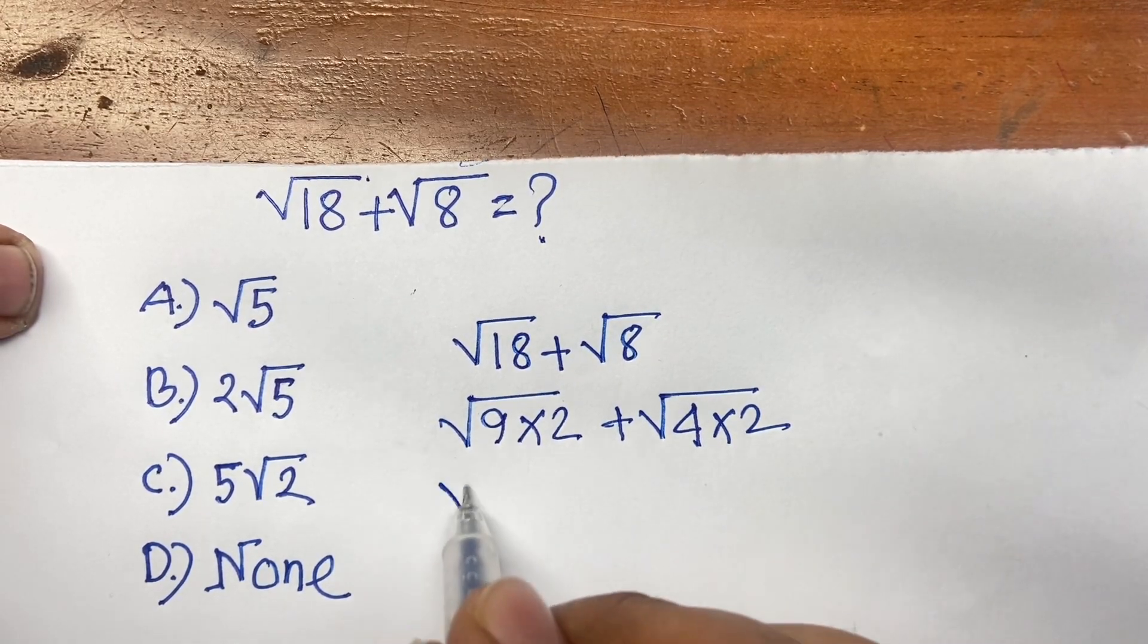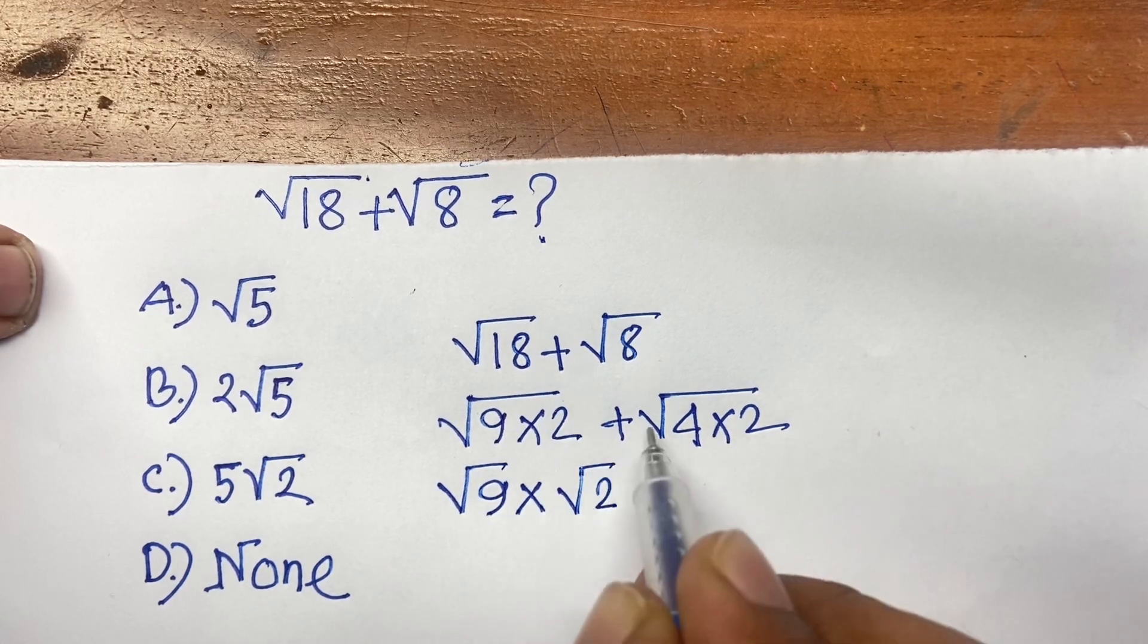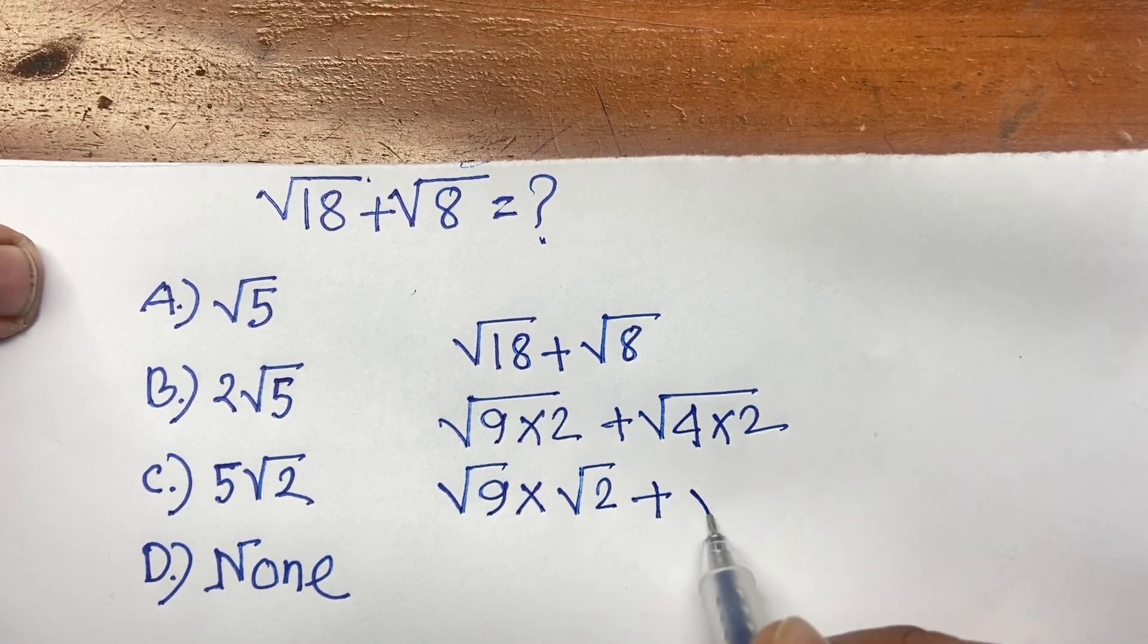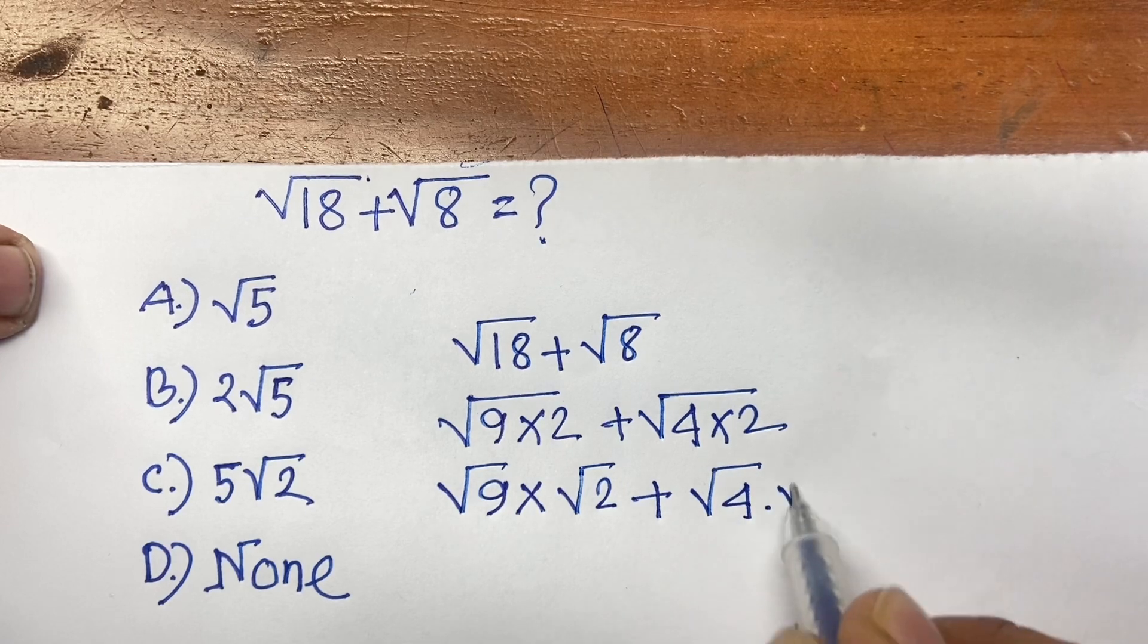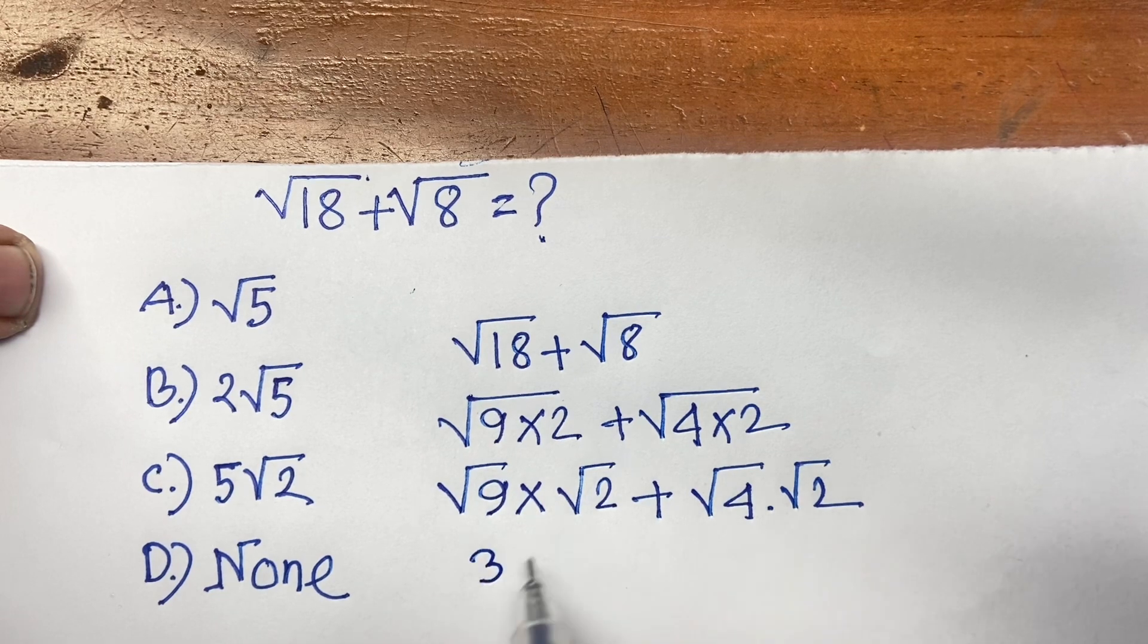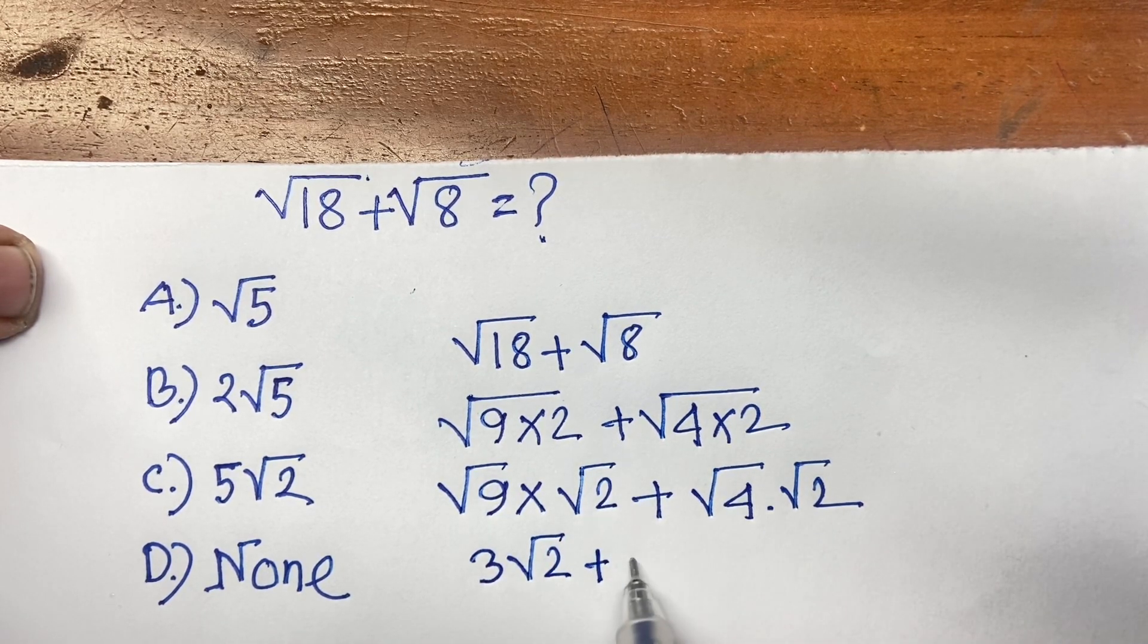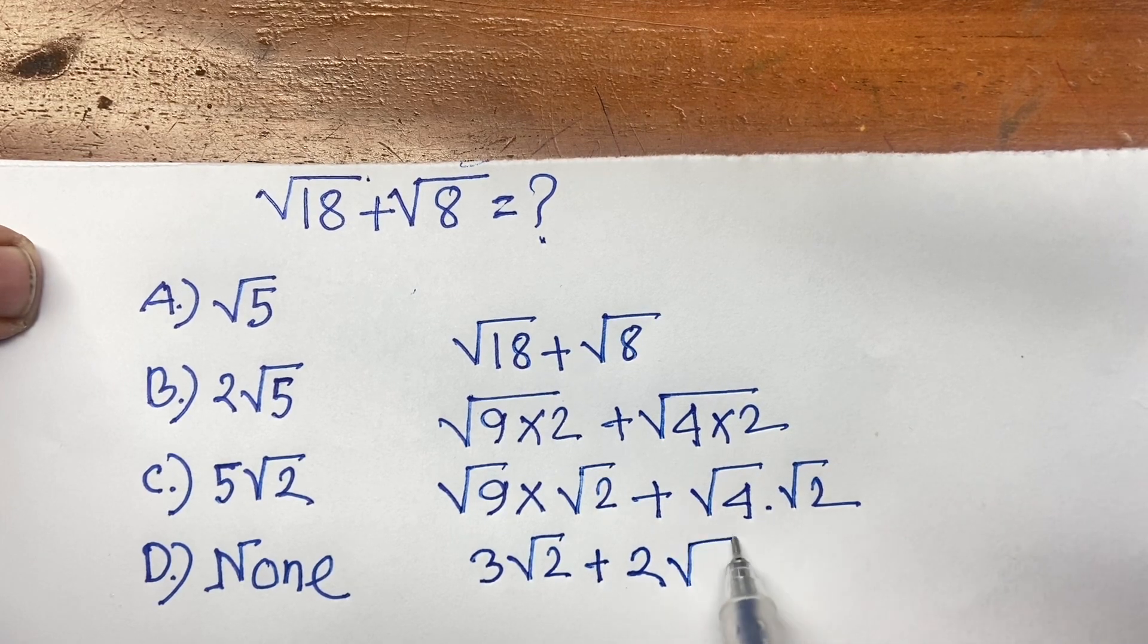Now here is square root 9 times square root 2, and here is square root 4 plus square root 2. Now you know that square root 9 equals 3. Here is square root 2, plus square root 4 equals 2, and here is square root 2.